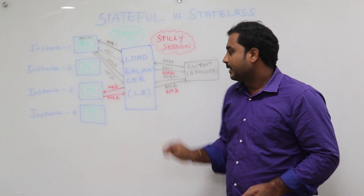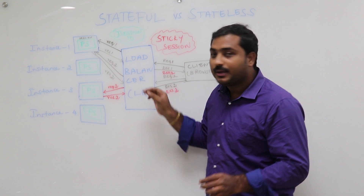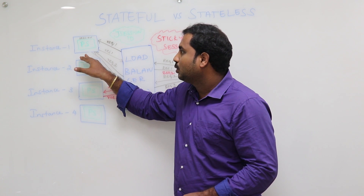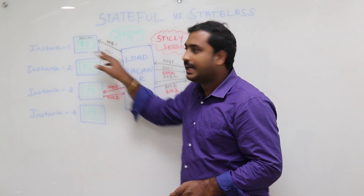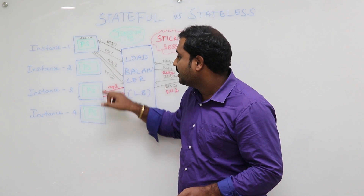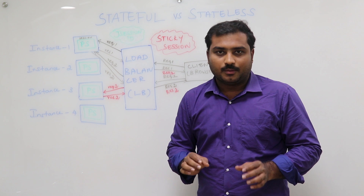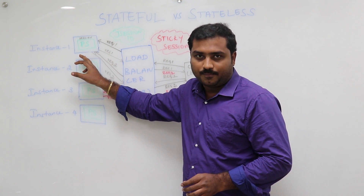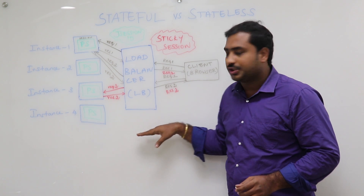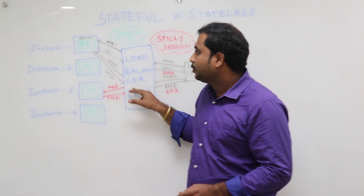Now assume a second request is coming from the same client. This second request also has to go through the load balancer. The load balancer should send the second request to the same Instance 1, because the session was created for the previous request in Instance 1. If the load balancer sends Request 2 to any other instance — Instance 2 or Instance 3 — you will obviously get an unauthorized error because the session was created only in Instance 1.